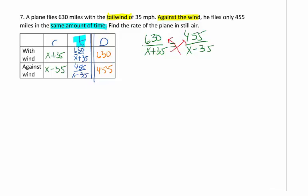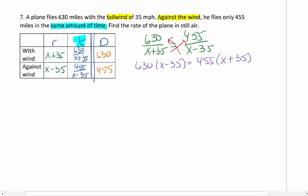Cross multiply. That's why this section, the proportions, are so important. So we have 630 times x minus 35 equals 455 times x plus 35. Please use your calculator to multiply this piece out. I don't expect you to be able to do this in your head, nor do I want you to. It's too easy to make careless mistakes that way. So I have 630x, and if I type that in my calculator I'm going to get 22,050 equals 455x plus, and if I do that one in my calculator I get 15,925.